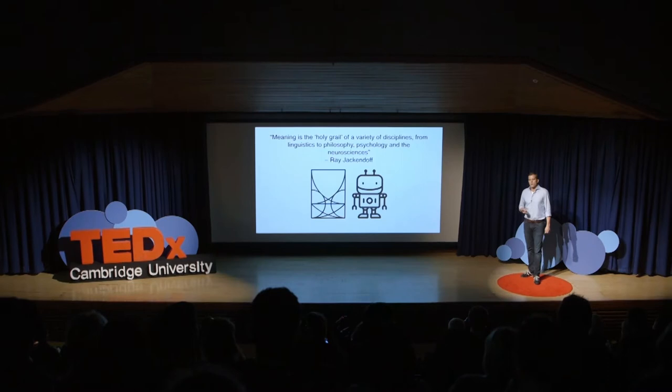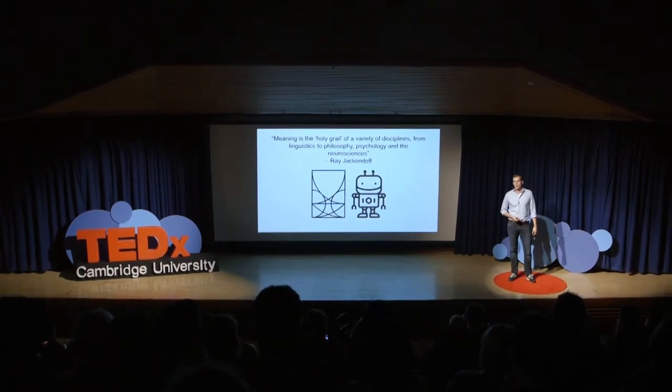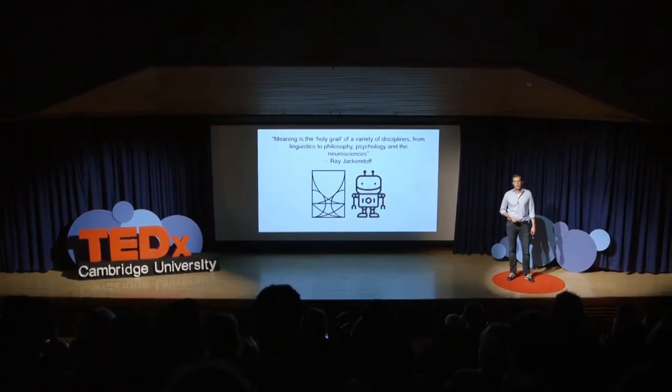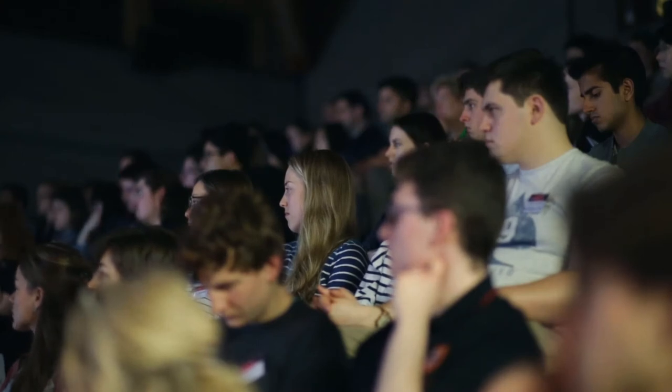My research has been concerned with trying to improve the way that computers understand meaning by making them learn to understand meaning in a more human way. One of the problems we need to solve is the so-called symbol grounding problem, which has a very long history in philosophy, arguably going back all the way to Plato and Aristotle.